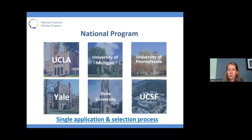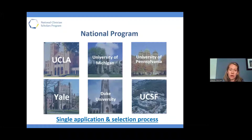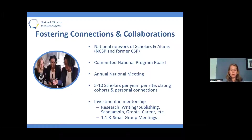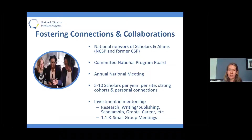We are a national program. We grew from the legacy Robert Wood Johnson Clinical Scholars Program, which traditionally focused on training MD scholars — now we include nurses. We have six sites: UCLA, University of Michigan, University of Pennsylvania, Yale, Duke, and UCSF. As a national program, we have a single application and a single selection process. This gives us the unique opportunity to grow networks and collaborations both within the site you attend and across all six sites.